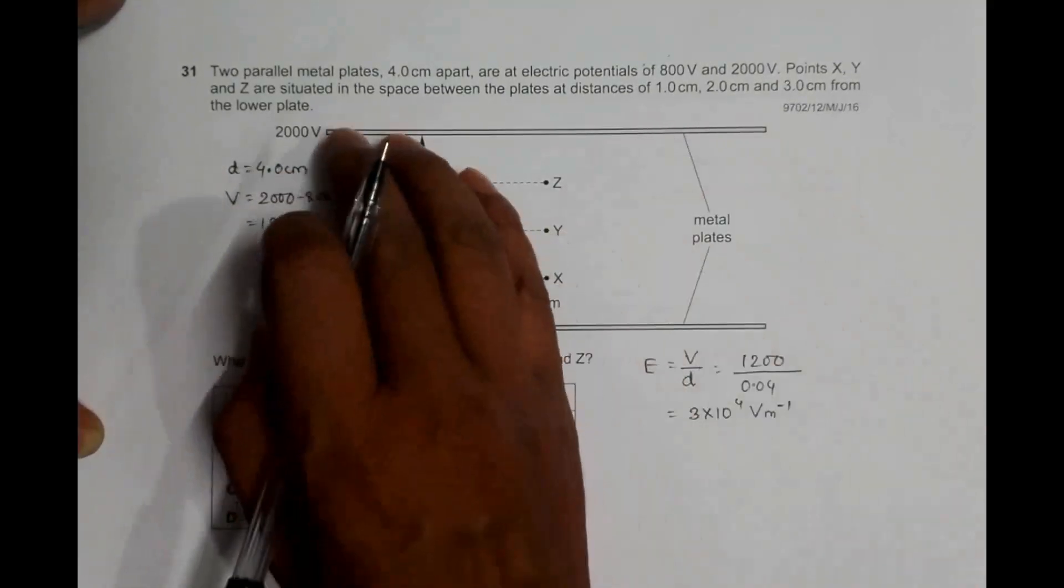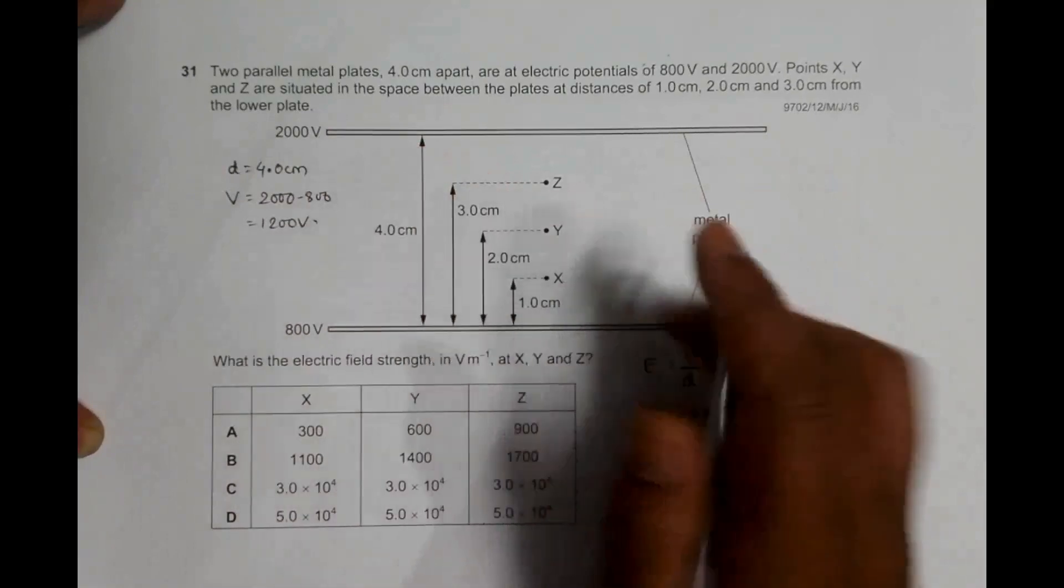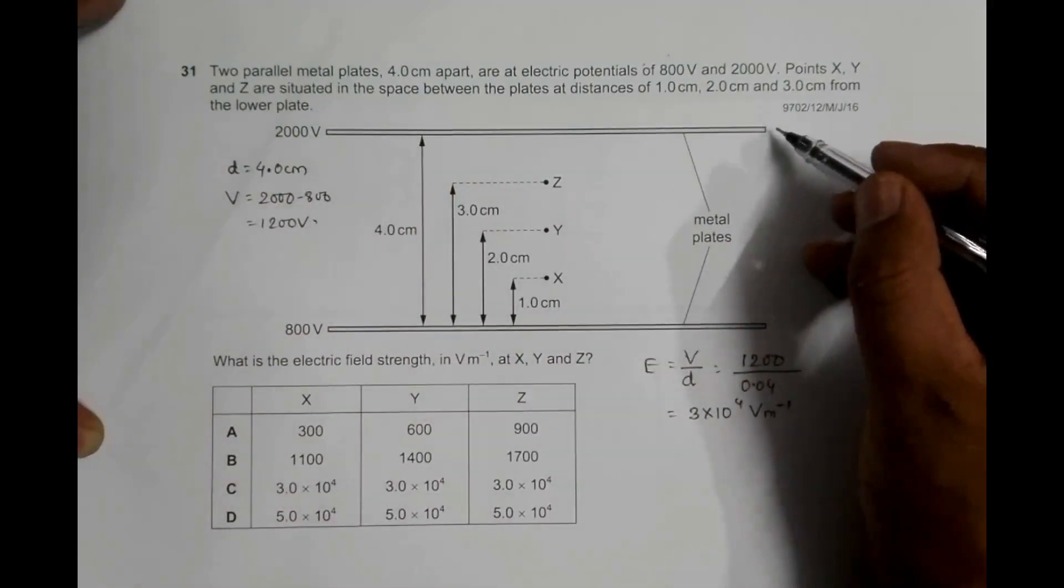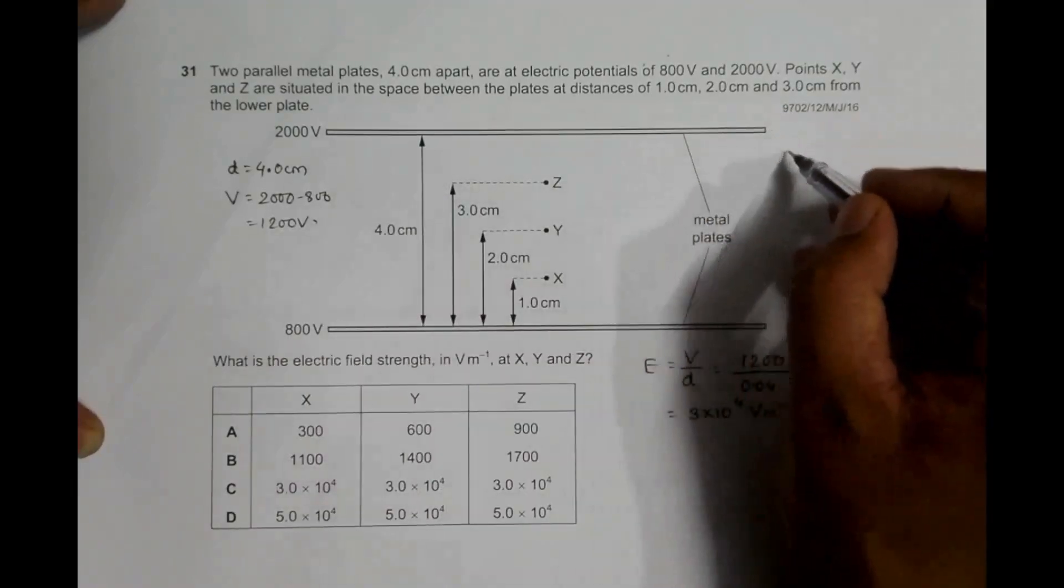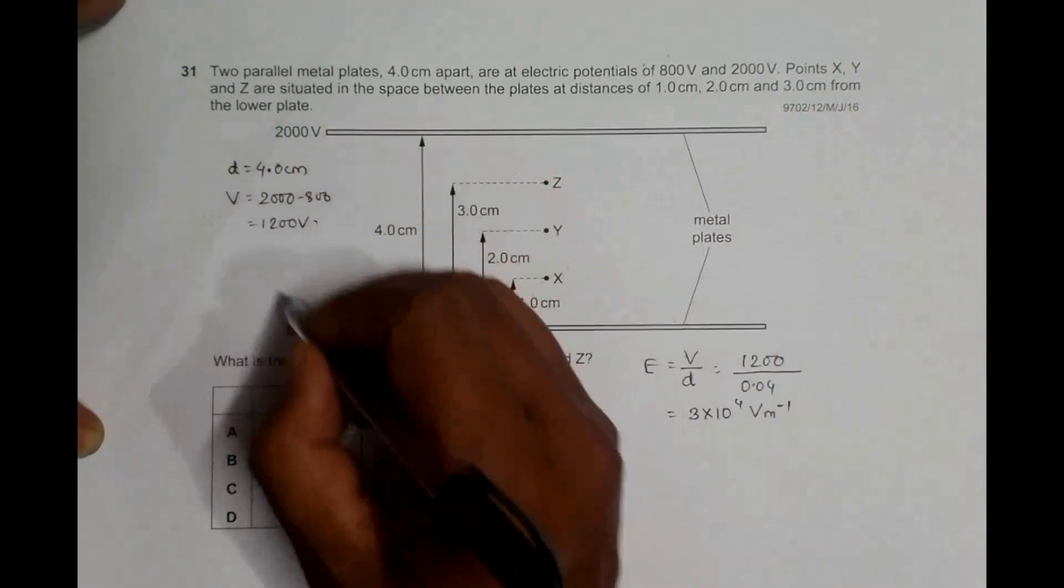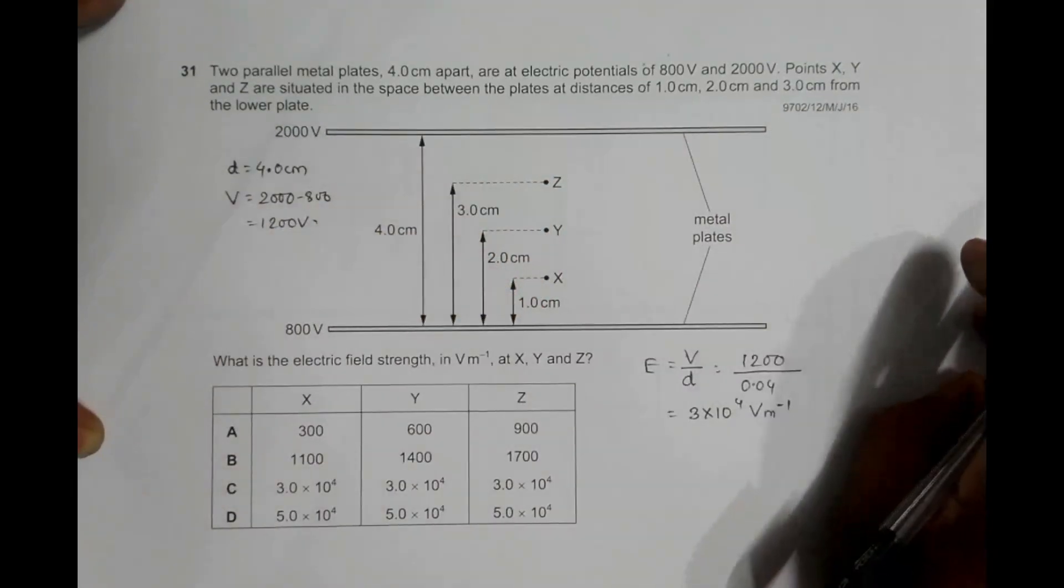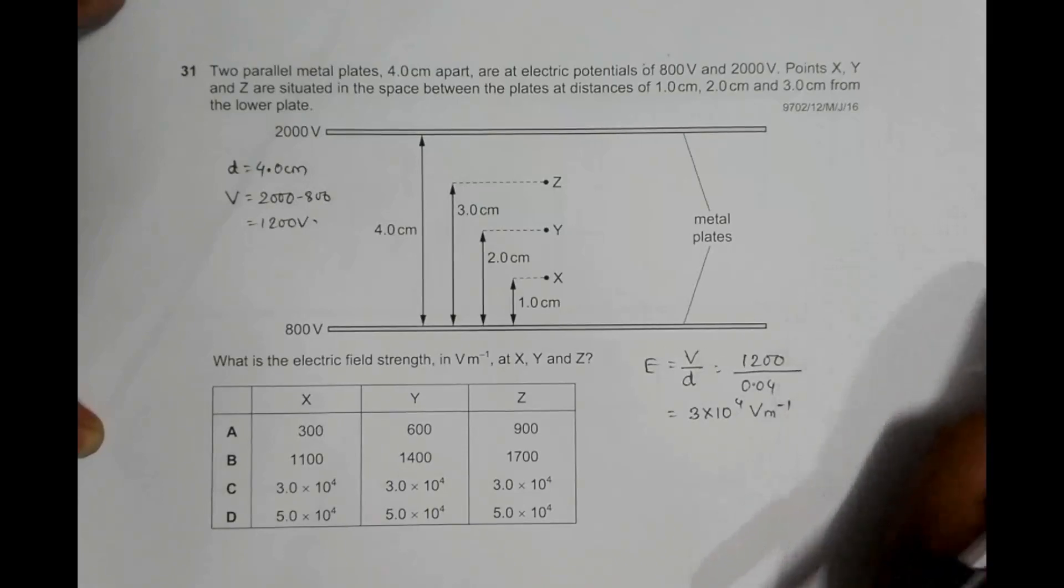So it is uniform everywhere inside this area. Slight variations could be at the edges where the lines of force might go somewhat like this. So here they go parallel like this, and at the edges they might go somewhat like this. But in totality, we can consider that the electric field strength is everywhere the same.